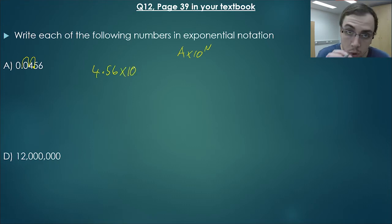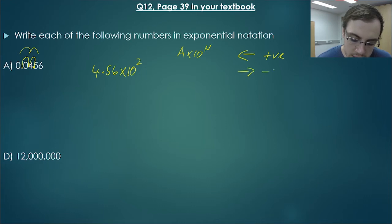Because we're moving the decimal point, we must put times 10 to the power of—we moved the decimal point twice, therefore it's the power of 2. Now remember, if we move the decimal point to the left, it's positive. If we move it to the right, it's negative. So that means because we moved it to the right, it is 4.56 times 10 to the negative 2.